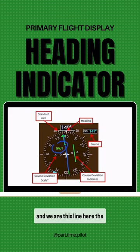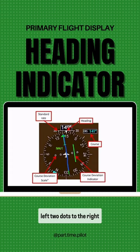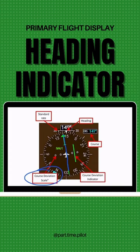This line here shows the CDI is off course. And then we have the scale right here — those four dots: two dots to the left, two dots to the right. That's our CDI scale.